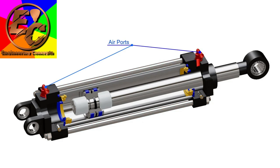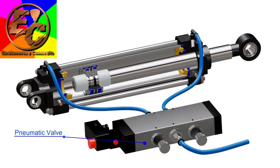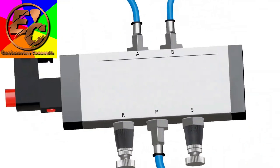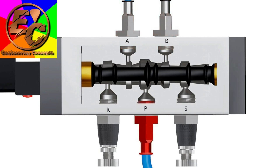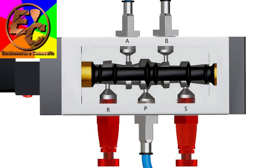Air ports are screwed to the ends through which compressed gas flows in and out. A pneumatic valve is connected to these air ports using pneumatic hoses. The valve shown here is a five-port, four-way valve. Ports A and B are connected to the cylinder, port P is connected to the compressed air supply unit, and ports R and S are exhaust ports to which pneumatic mufflers are attached.